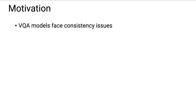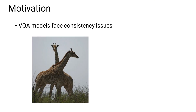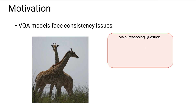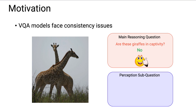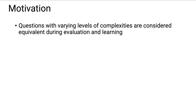Current visual question answering models often are not consistent. For instance, they might think that these giraffes are not in captivity but also think that there exists a fence around them, which is confusing because one would think that it might rely on the fence to decide if the giraffe is in captivity. This makes it hard to trust these systems.